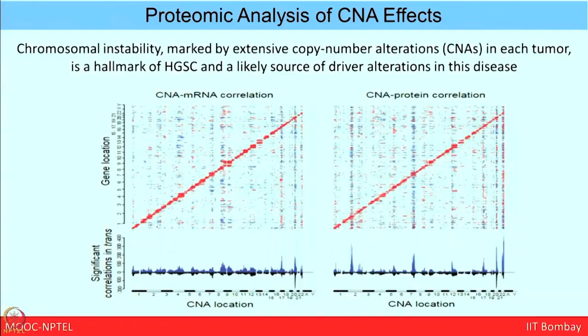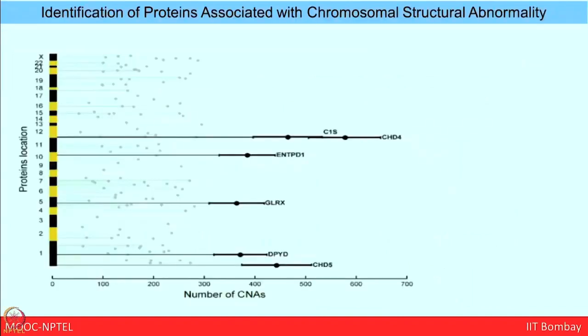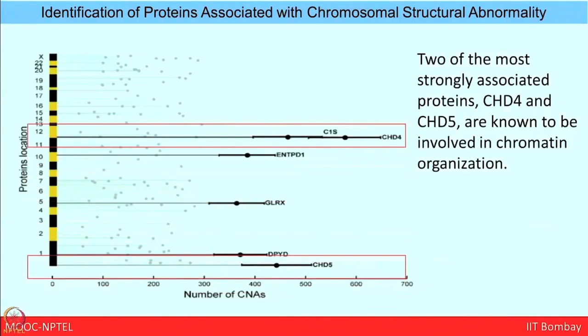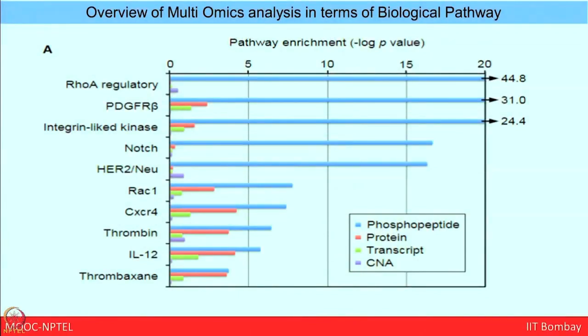They also tried to understand how copy number aberrations (CNA) in each tumor play a role in protein and mRNA correlation. The blue data represents the complete profile of data generated, whereas the black data is already present in the database. From the CNA-mRNA and CNA-protein correlation, they found that two important proteins, CHD4 and CHD5, have the maximum number of CNAs. When they further studied these, they found these two proteins are involved in chromatin organization. To understand the complete biological pathway, they took phosphopeptides, proteins, transcripts, and CNAs and found the top pathways playing a role in this cancer pathobiology.